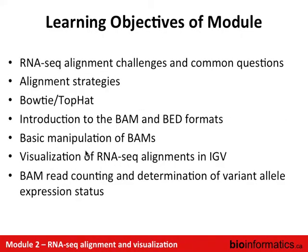The learning objectives of this module are to perform alignment and learn about alignment challenges and common questions, discuss different alignment strategies, review Bowtie and TopHat — the aligner we're using in this course. We'll introduce BAM and BED formats and do some basic manipulation of BAMs, visualize RNA-seq alignments in the Integrative Genomics Viewer, and do BAM read counting and look at variant allele expression status in real data.